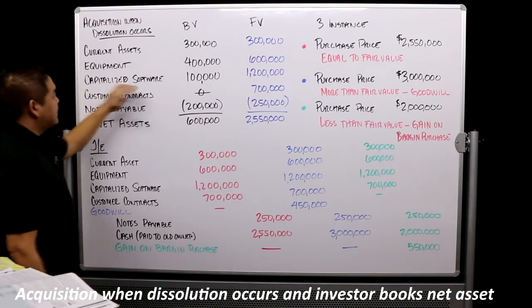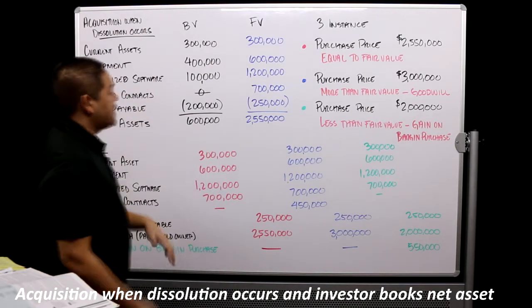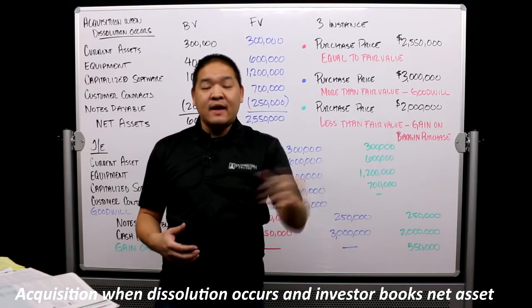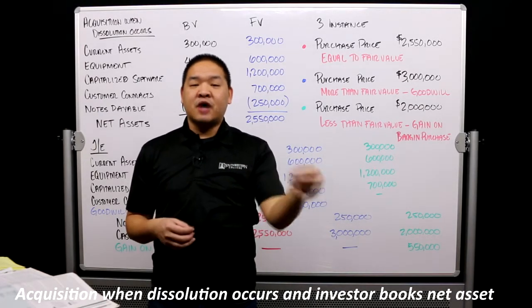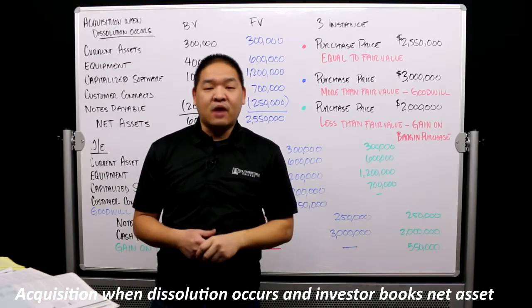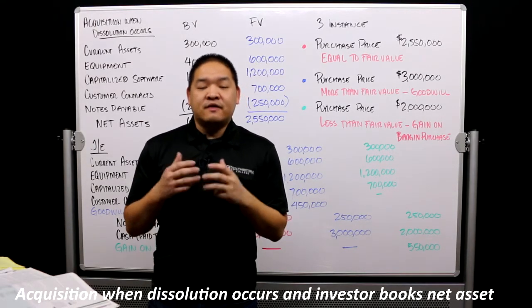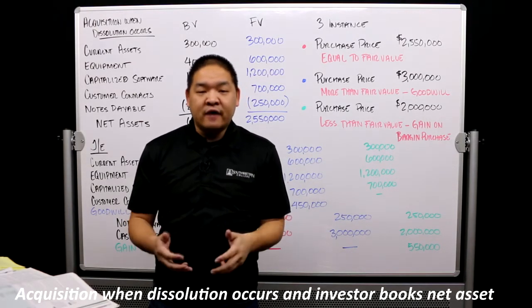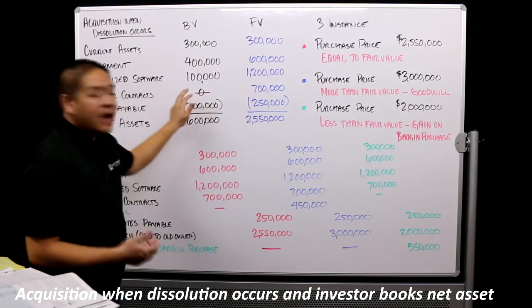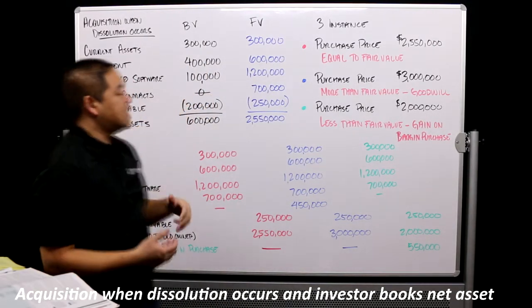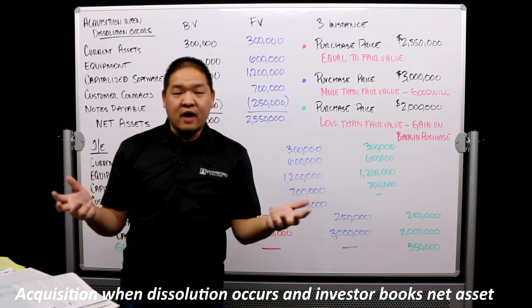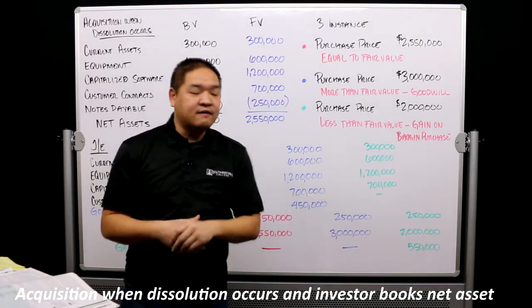Now capitalized software - let's say the reason we're buying this investee is because they have valuable software. That software we believe is worth $1.2 million, not $100,000 which is how much they theoretically spent on making it - the book value they still have left.